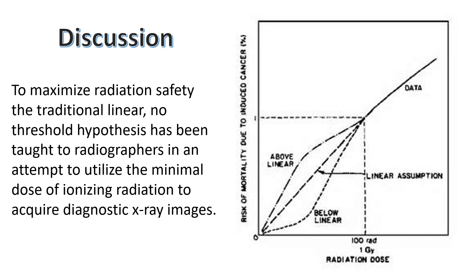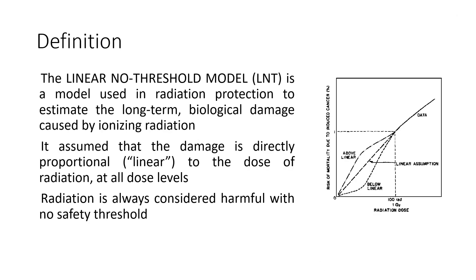To maximize radiation safety, the traditional linear no-threshold hypothesis has been taught to radiographers in an attempt to minimize dose usage when they create an exposure. The usual way we discuss this with radiography students is to go over the theory itself, but then emphasize that this theory states that no amount of radiation is safe — that one photon of energy can interact with the nucleus of a cell's DNA and cause cancer. The thing we don't stress is: what is the probability of that actually happening? The linear no-threshold model is used in radiation protection to estimate the long-term biological damage caused by ionizing radiation.